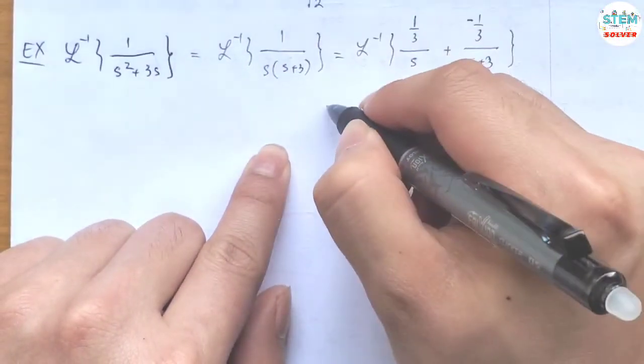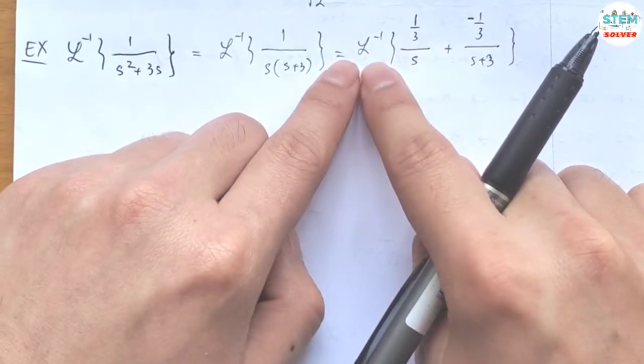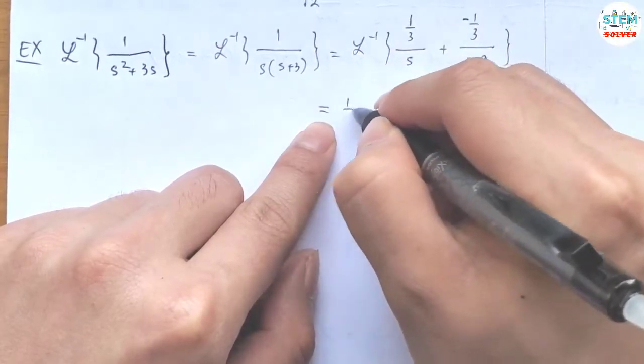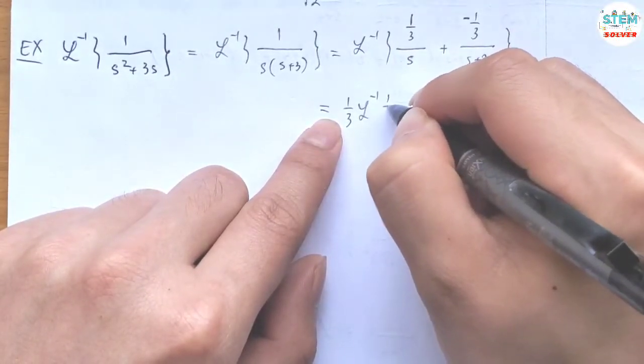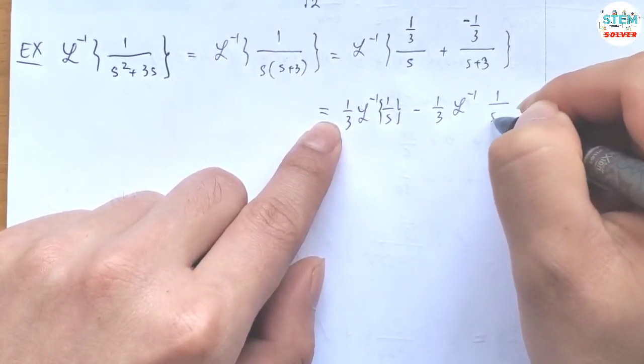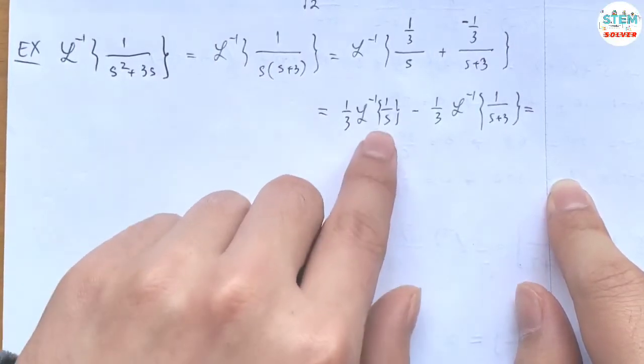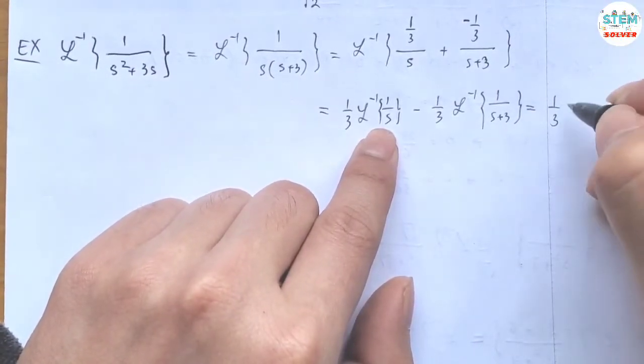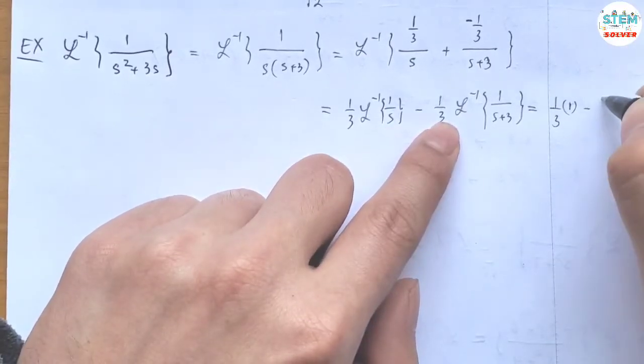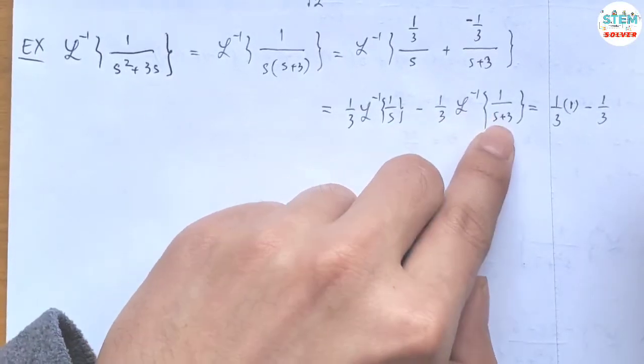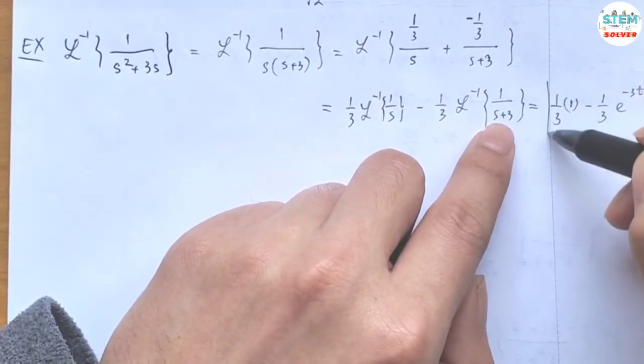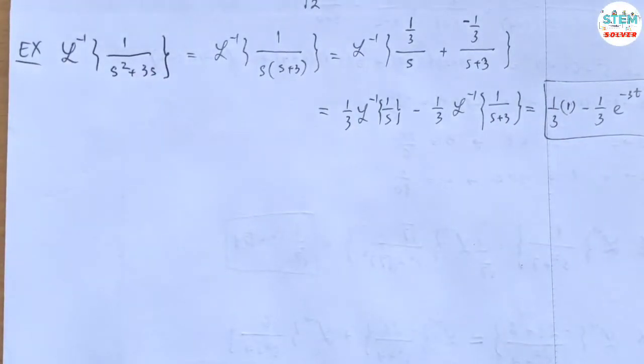Okay, now I'm going to apply the L inverse to every single term here. So I have, and by the way, I'm going to pull out the 1/3. So I have 1/3 L inverse of 1 over s, minus 1/3 L inverse of 1 over s plus 3. Now L inverse of 1 over s is 1. Minus 1/3 L inverse of 1 over s plus 3 is equal to e^(-3t). So this is your final answer eventually. That's it.